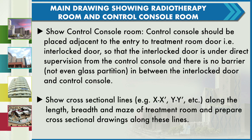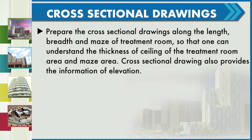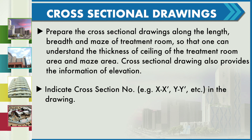We need to show cross-sectional lines such as XX, YY, etc. along the length, breadth, and maze of the treatment rooms, and prepare cross-sectional drawings along these lines. The cross-sectional drawings should be prepared along the length, breadth, and maze of the treatment room so that one can understand the thickness of the ceiling of the treatment room area and maze area. Cross-sectional drawings also provide elevation information, and the section number must be indicated in the drawing.